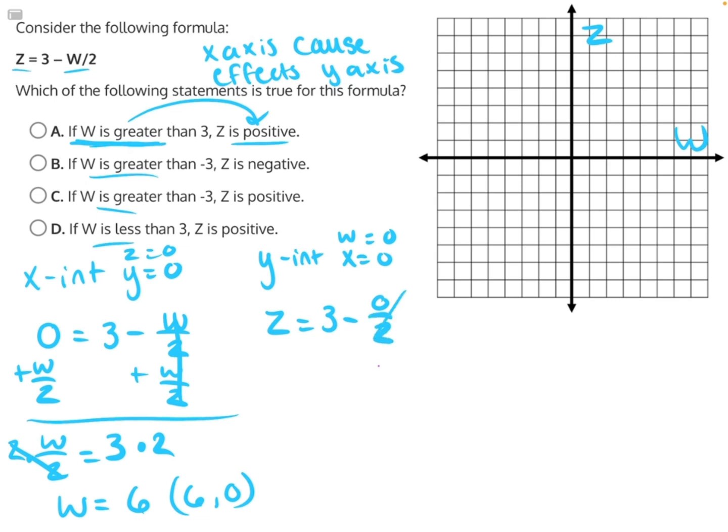0 divided by 2 will just give us 0, so we can cross that out, and we are left with z = 3, or the coordinate point (0, 3).